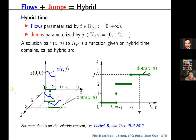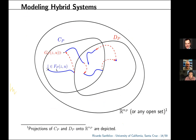The hybrid basic conditions require the sets C and D to be closed, and the maps F and G — the flow map and jump map — to be continuous for single-valued maps, or outer semi-continuous with locally bounded values for set-valued maps. A hybrid arc is a function that, for each fixed j, is locally absolutely continuous over the interval of flow. The flow of the solution occurs when the state is in the projection of the flow set on the state space, and jumps occur when the state belongs to the jump set.